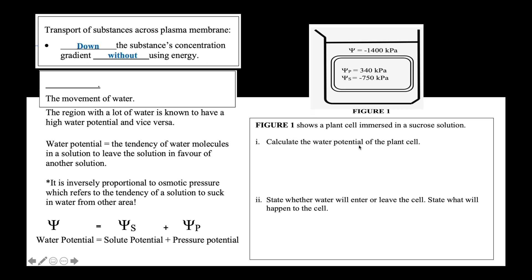Calculate the water potential of the plant cell. Writing down the formula often gives you one mark. The solute potential of the cell is negative 750 kPa, plus the pressure potential of the plant cell, which is 340 kPa, giving you the final answer of negative 410 kPa.